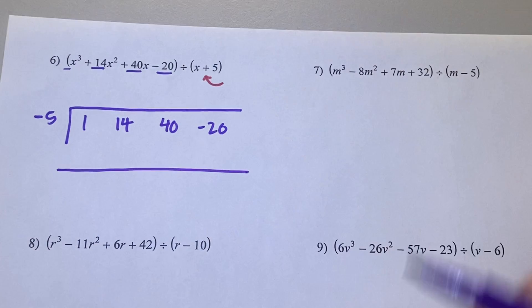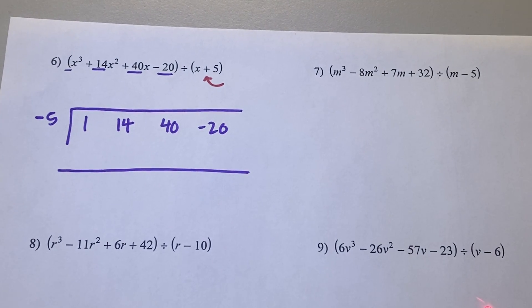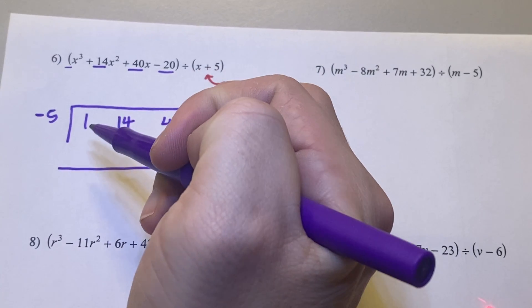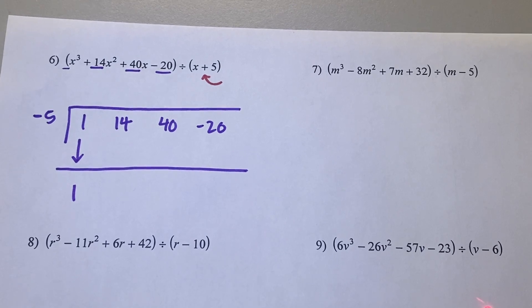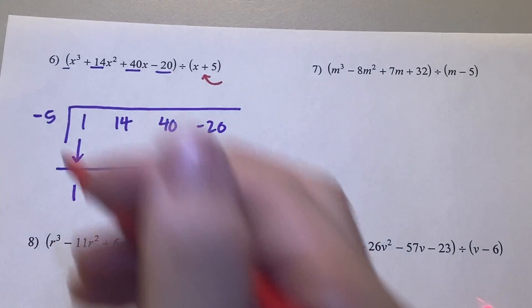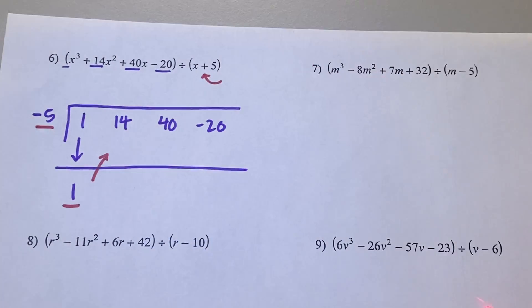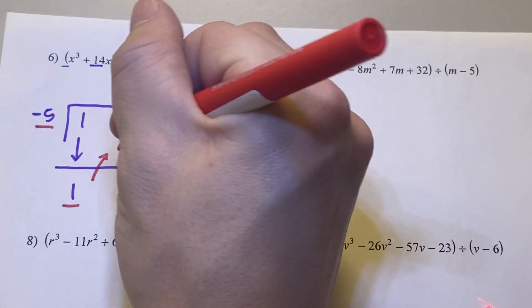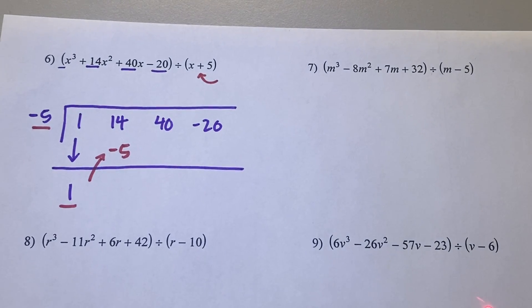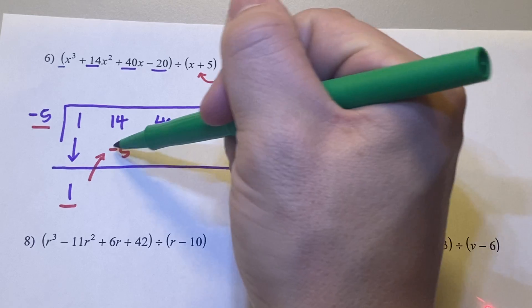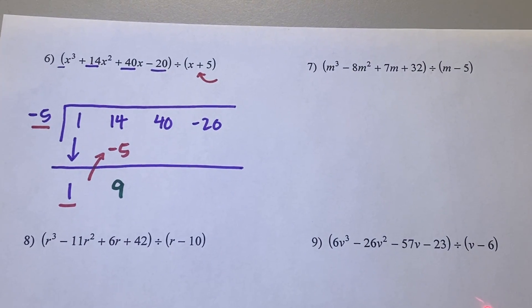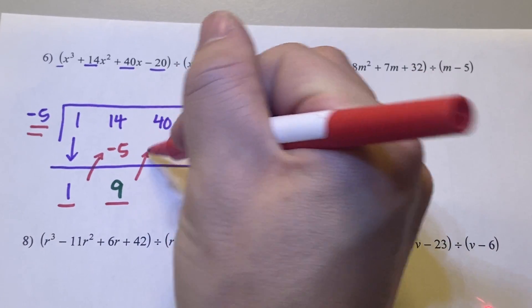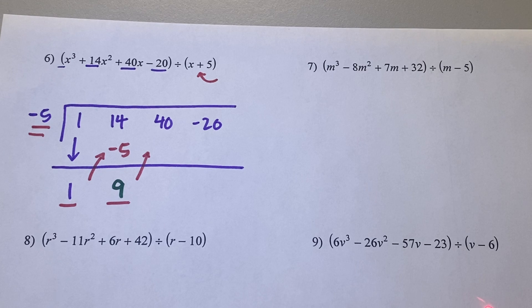Give yourself some space, draw your line. What do we do with that first guy? Pull him down. Now we follow the pattern: negative 5 times 1. What's going to go in this space? Negative 5. Combine: what is 14 minus 5? Positive 9. Repeat the step: negative 5 times 9 — what's going to go in this spot? Negative 45.